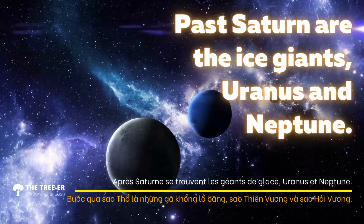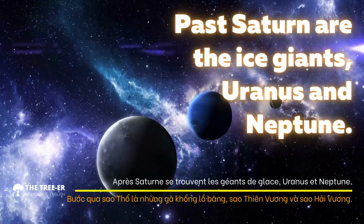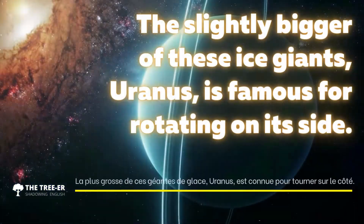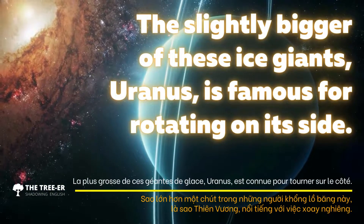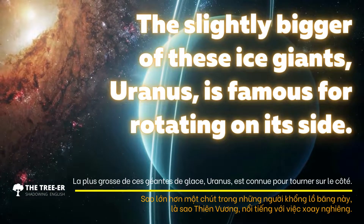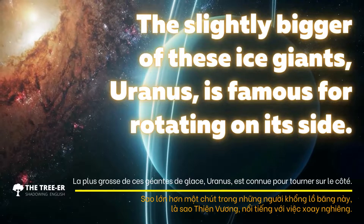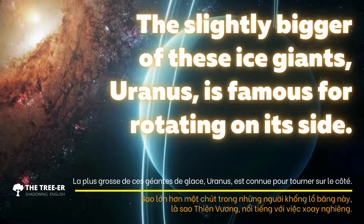Past Saturn are the ice giants Uranus and Neptune. The slightly bigger of these ice giants, Uranus, is famous for rotating on its side.